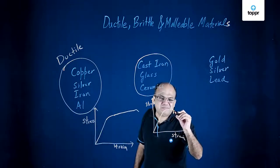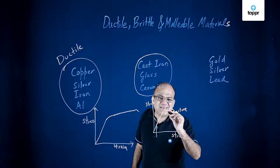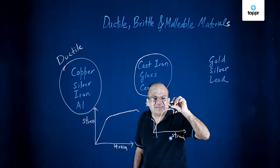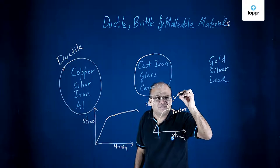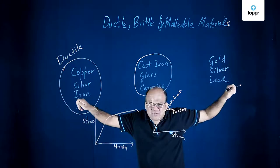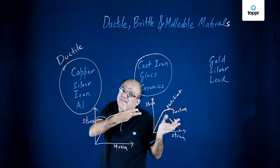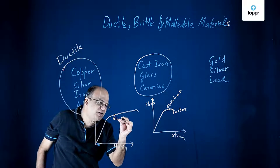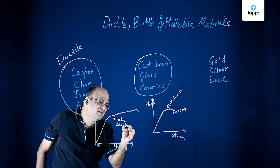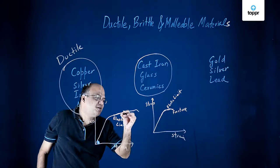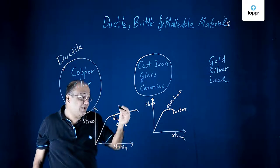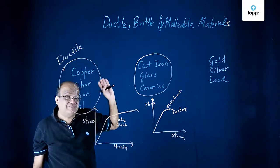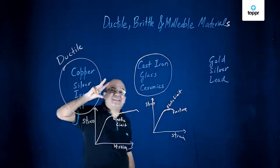Here is the fracture point, very close to the elastic limit. This is the elastic limit. You cannot draw them into thin wires because they break as soon as the elastic limit is exceeded. For ductile materials, the elastic limit is here, the proportional limit is here, and you can extend it quite a big distance. Therefore, we can draw ductile materials into thin wires.